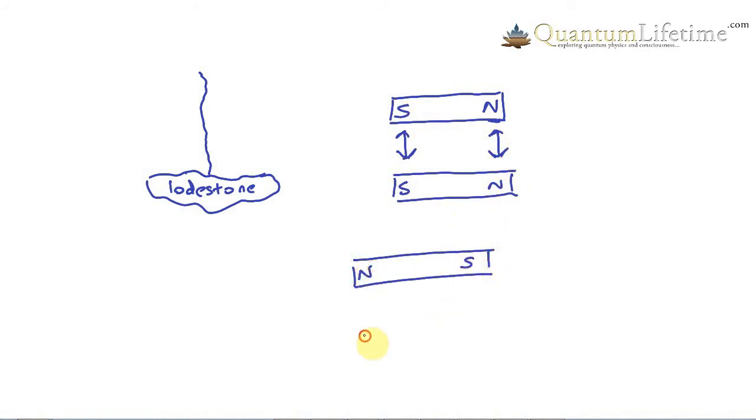Conversely, if you take one oriented this way and another one oriented this way so that the two different poles are near each other, the north pole of one will tend to attract the south pole of the other and vice versa.